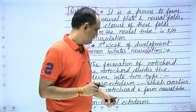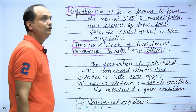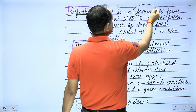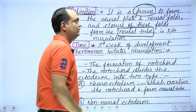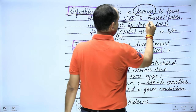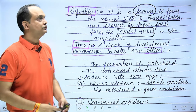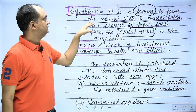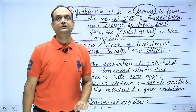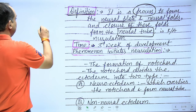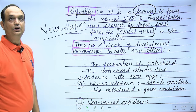Whenever you have this question in your exam, always first write down the definition of the process. Neurulation is a process by which there is formation of the neural tube. For neural tube formation, first there is formation of a neural plate, the plate converts into folds, the folds fuse with each other, and finally we have the neural tube. So neurulation is essentially the formation of the neural tube.